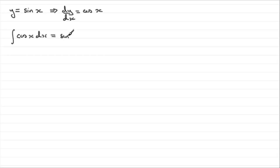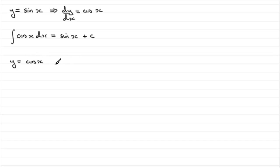So the integral of cos x with respect to x is going to be sin x. We mustn't forget that constant of integration. And similarly, if we were to take y equals cos x and we were to differentiate this with respect to x, you should remember that dy by dx came out to be minus sin x.